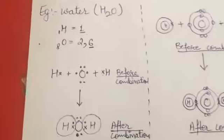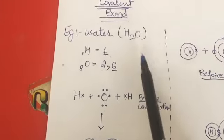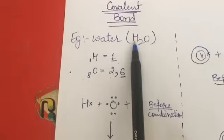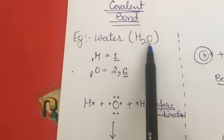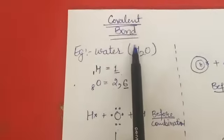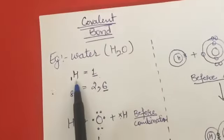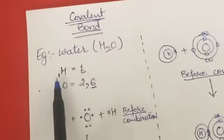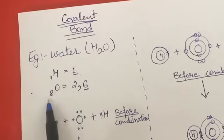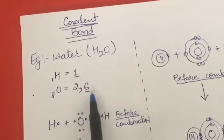In a covalent bond, an example is water. Hydrogen is a non-metal and oxygen is also a non-metal, so the bond kind is covalent. Hydrogen has atomic number one with electronic configuration one, and oxygen has atomic number eight with electronic configuration two, six.